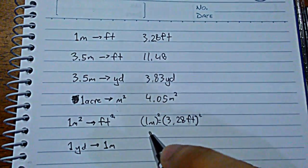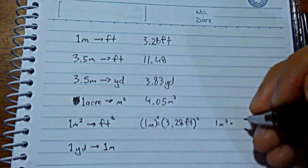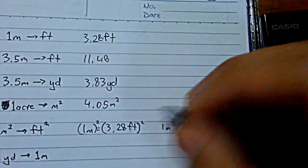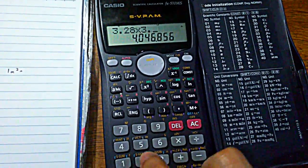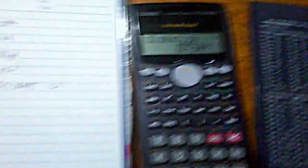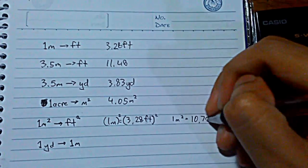So the square of one meter is just basically one square meter, and then the square of 3.28 feet. So I use my calculator again. 3.28 times 3.28 to get the square. 10.76. So one square meter is equal to 10.76 square feet.